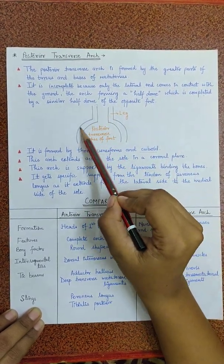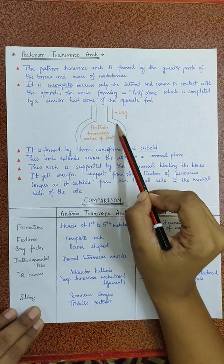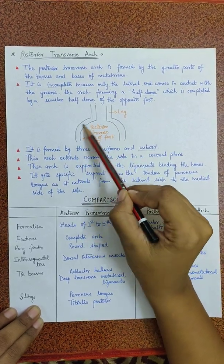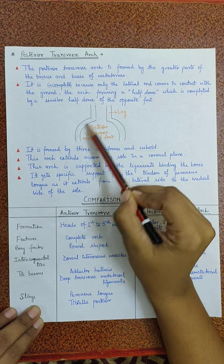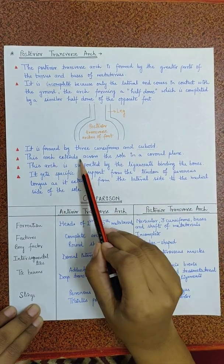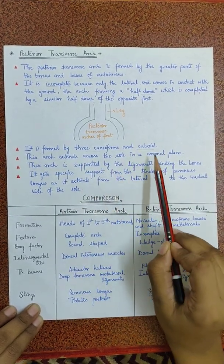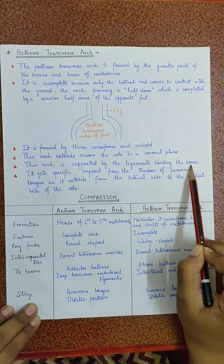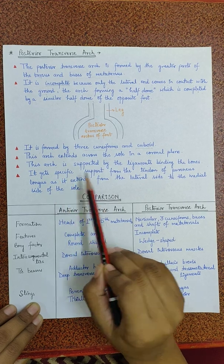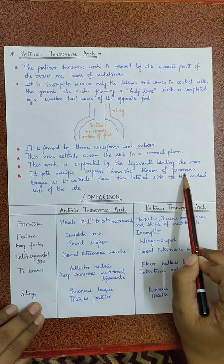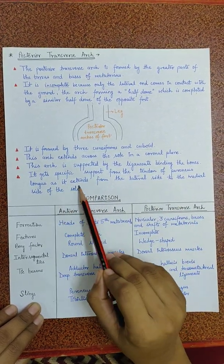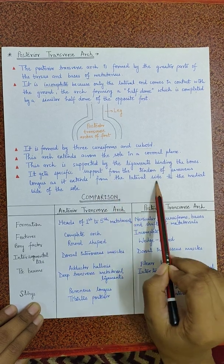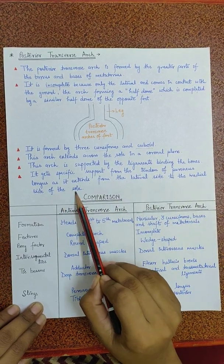Here in the diagram, this is the half dome of one foot and this is the half dome of the other and they together make a complete arch. This arch extends across the sole in a coronal plane. This arch is supported by the ligaments binding the bones. It gets specific support from the tendon of peroneus longus as it extends from the lateral side to the medial side of the sole.